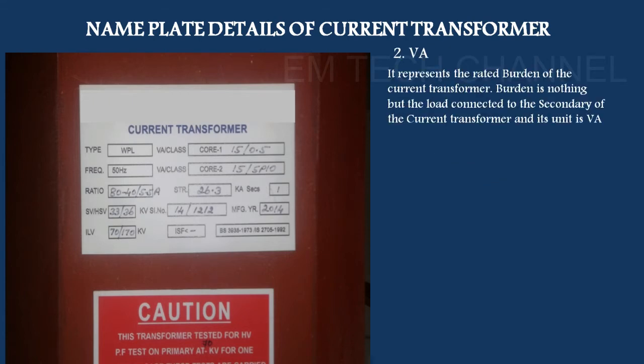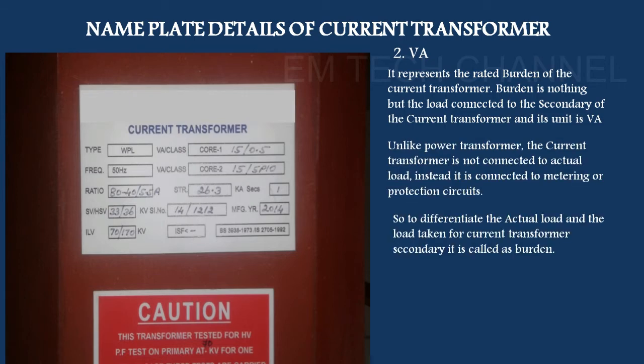VA is the rated burden of the current transformer. What is connected to the CT secondary? We can load a burden on it. We can use the CT secondary with a protective relay. That connected load is called the burden. The load on the CT secondary — such as a meter, wire resistance, or relay — all together make up the burden.